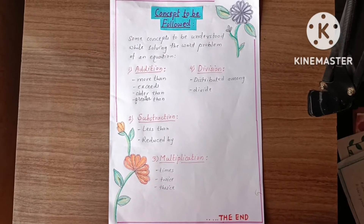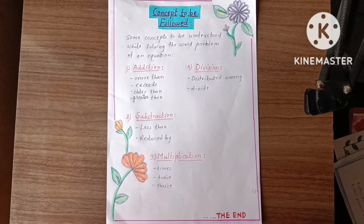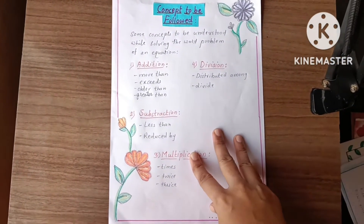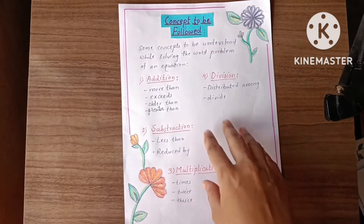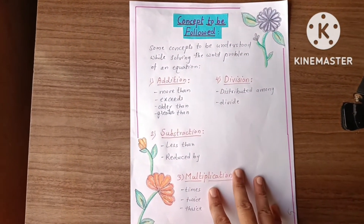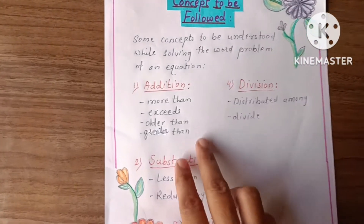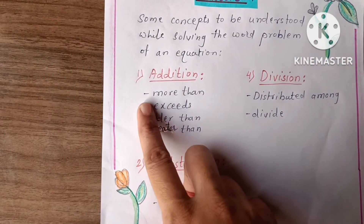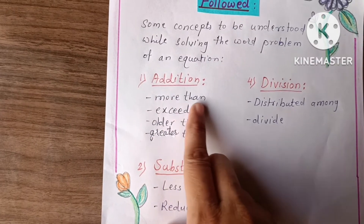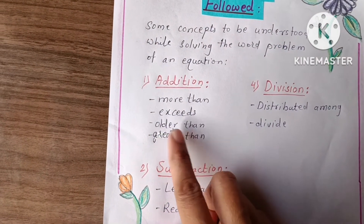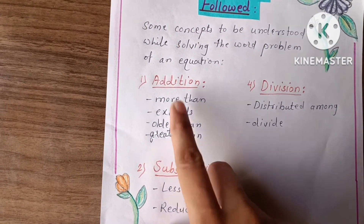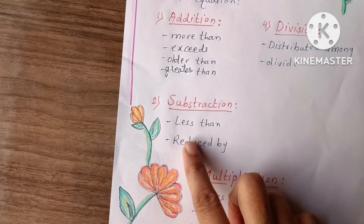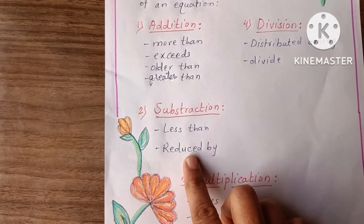The next page is about concepts to consider while solving equation problems. In word problems, if words like 'more than', 'exceeds', 'older than', or 'greater than' come, it means we have to do addition. If words like 'less than' or 'reduced by' come, it means we have to do subtraction.